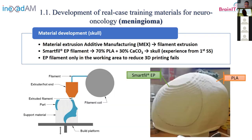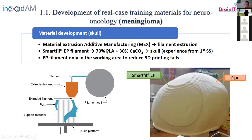To do that, the first thing we did was assess different materials for the manufacturing of the skull. We focused on material extrusion additive manufacturing. From the previous summer school, we selected the Smart Fill EP filament — a PLA filament with some calcium carbonate. According to previous tests, this material was more similar to real bone than standard PLA, so the cutting forces were more similar.